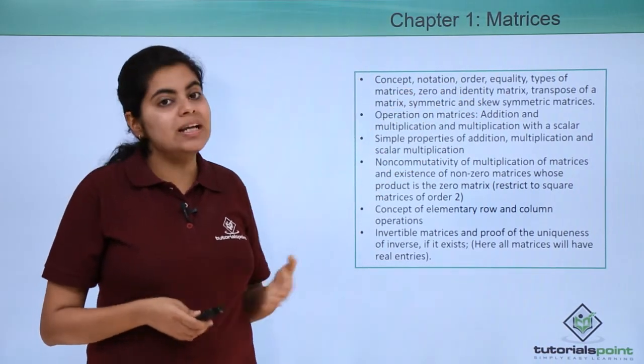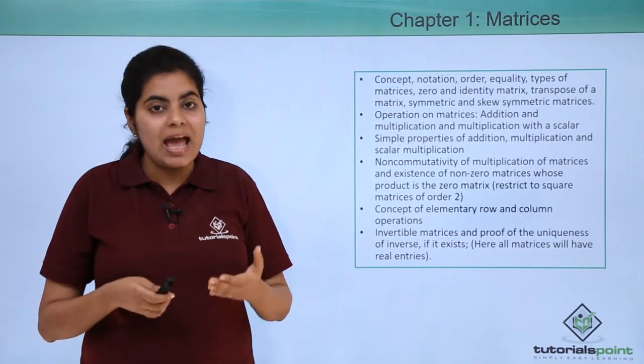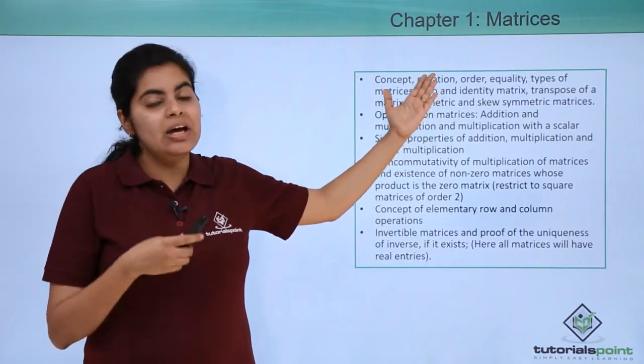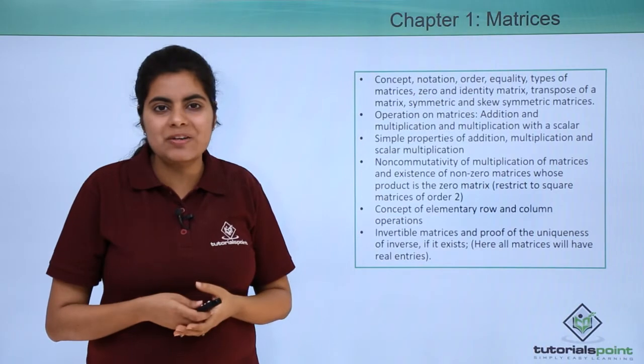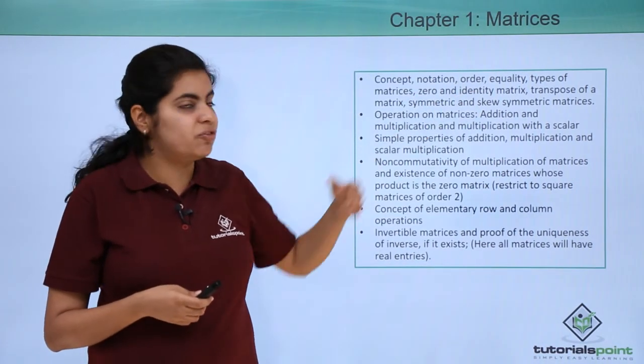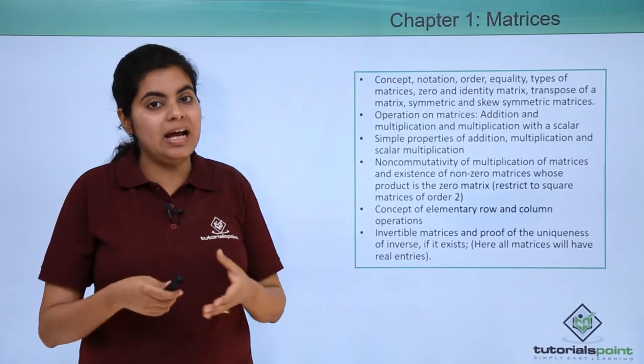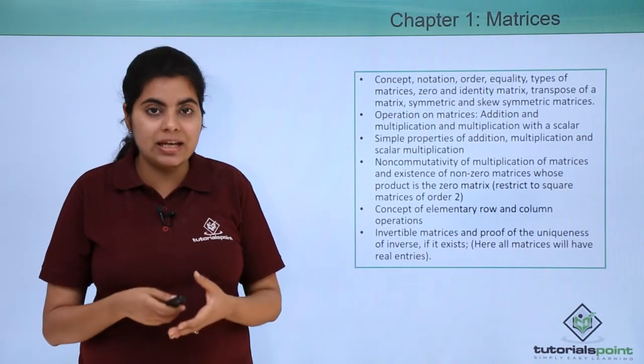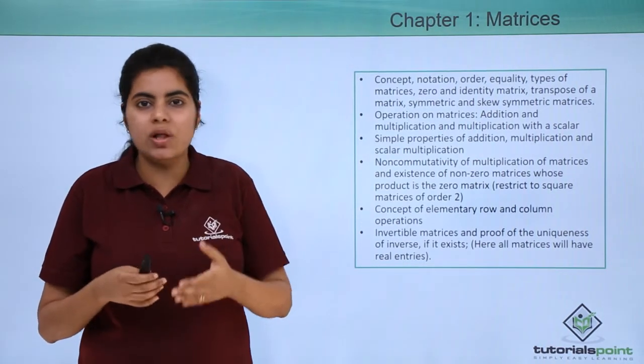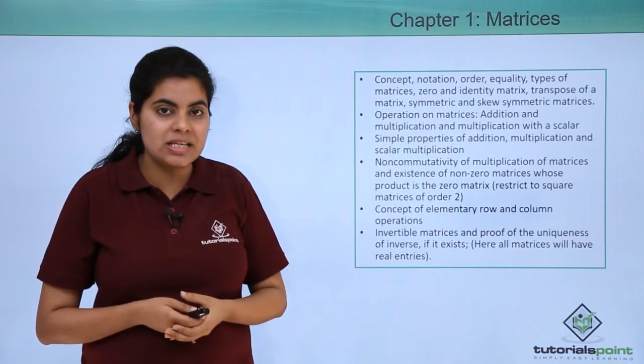We'll go into more detail regarding the notation, the order of the matrices, then some depth in the form of equality of matrices, then would be types of matrices. Now types of matrices is again constituting of many types, so we have to cover all the types one by one. Then we would be having zero and identity matrices.